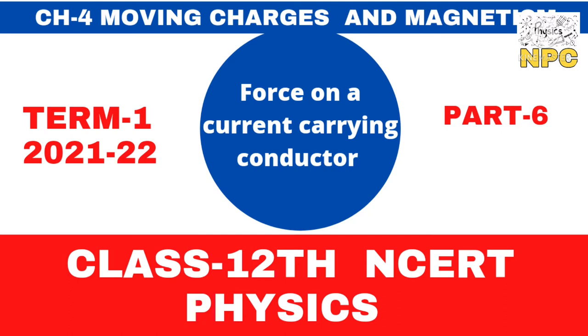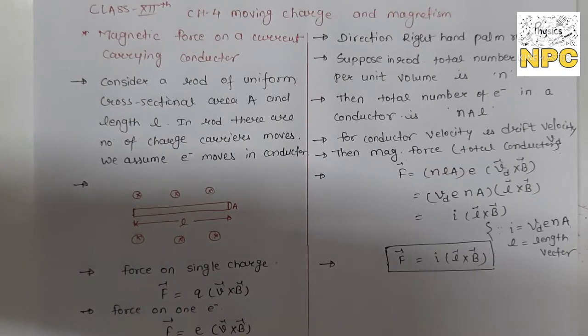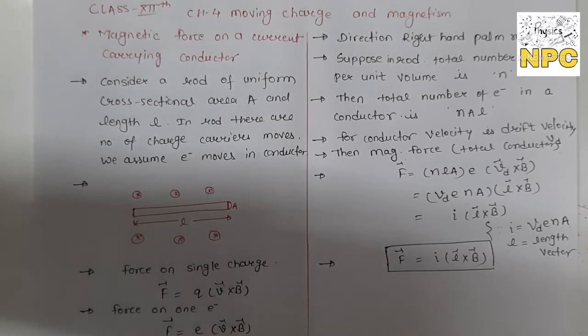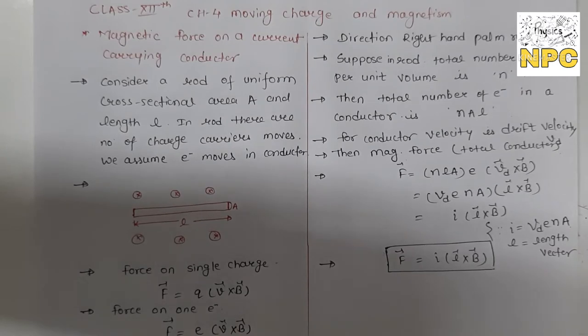we found magnetic force on a single charge: F is equal to QV cross B. We discussed this in the last video lecture.